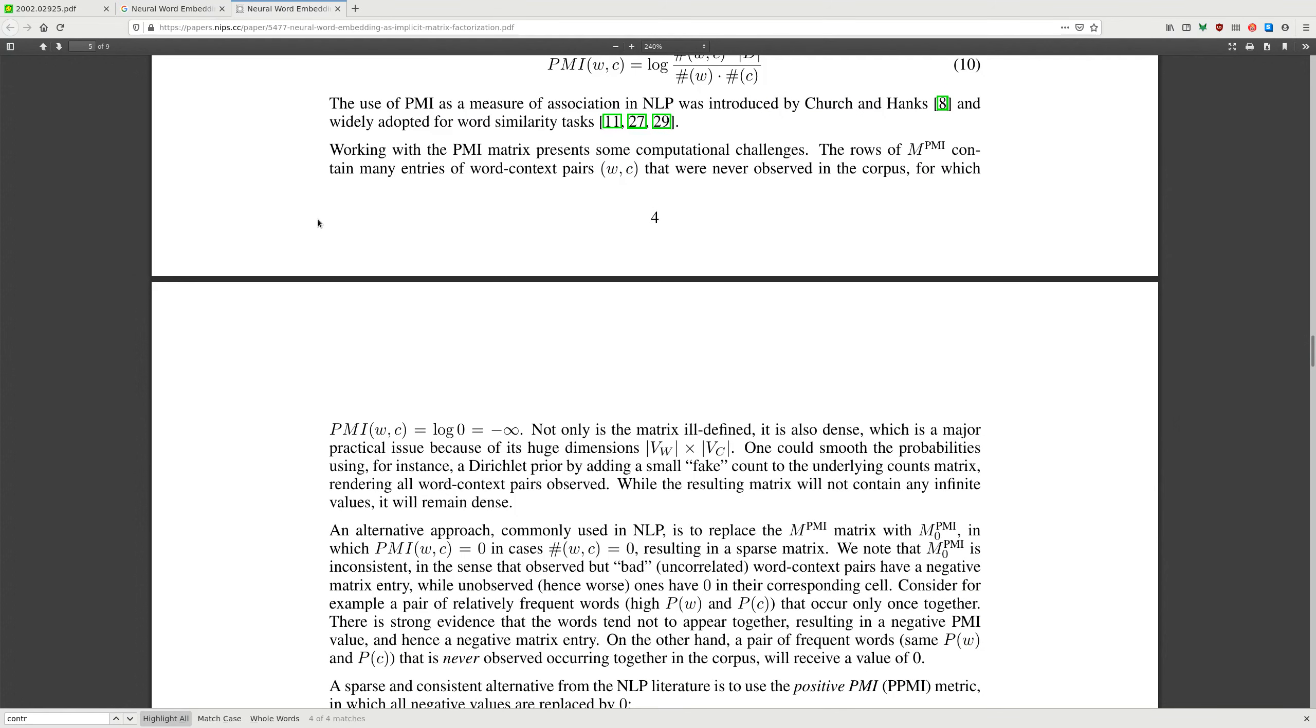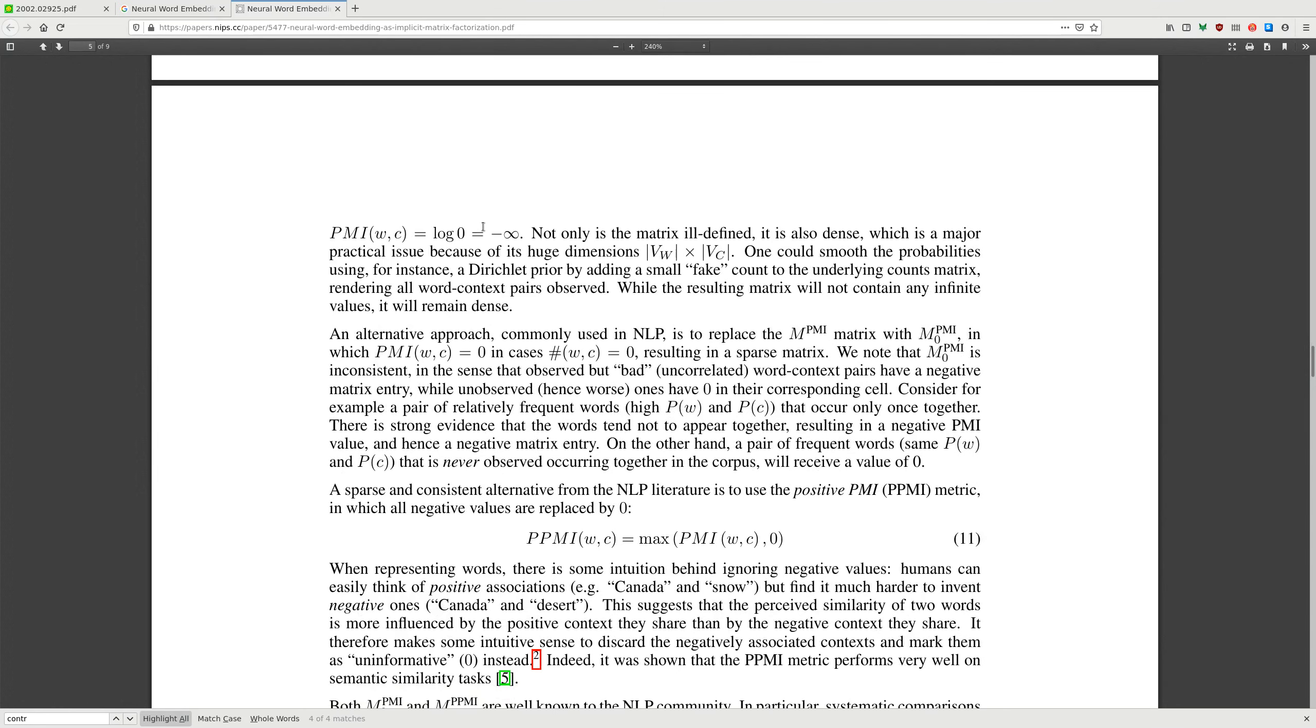Working with PMI matrices presents some computational challenges. The rows of PMI contain many entries of word-context pairs that were never observed in the corpus, for which PMI is log zero, which is minus infinity. Not only is the matrix undefined, it is also dense, which creates practical issues because of its huge dimensions. One could smooth the probabilities by using, for instance, a Dirichlet prior, adding a small fake count to the underlying count matrix and dealing with all word-context pairs observed.